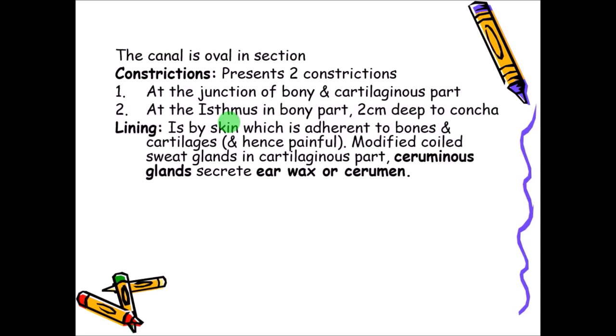The lining of the external acoustic meatus is by normal skin, totally adherent to the bone and cartilage. The lateral one-third is cartilage and the inner two-thirds is bony. Because the skin is totally adherent with no space for accumulation, even slight infection leads to severe pain due to accumulation of pus or inflammation fluid with no room to expand.